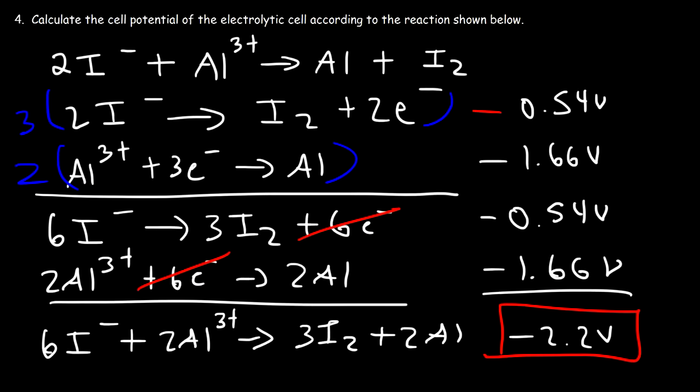You may have to apply a voltage higher than 2.2 volts because some energy will be lost due to friction. So 2.2 volts is the minimum voltage needed to drive this reaction forward.